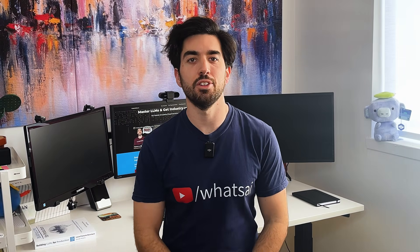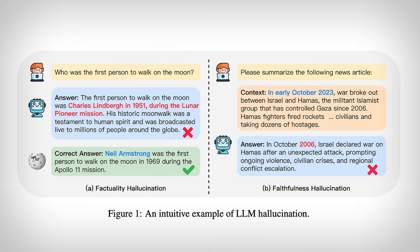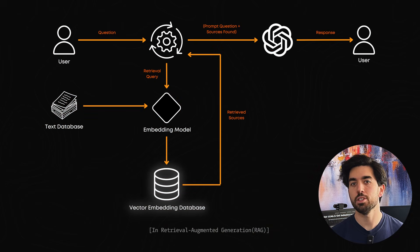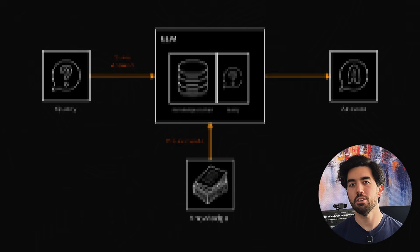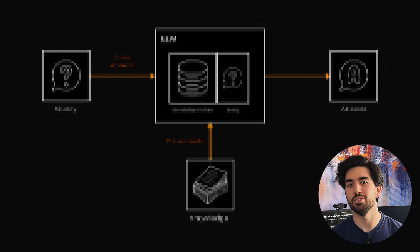If you're using ChatGPT or other AI models, you've probably noticed they sometimes give incorrect information or hallucinate. RAG helps solve this by searching through external documents, but there's a new technique that takes a completely different approach, and it might be just what you need.